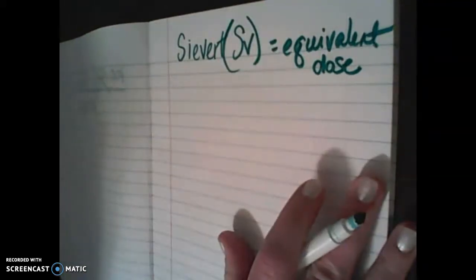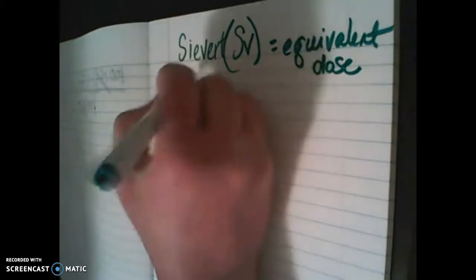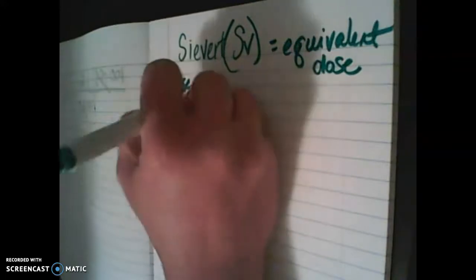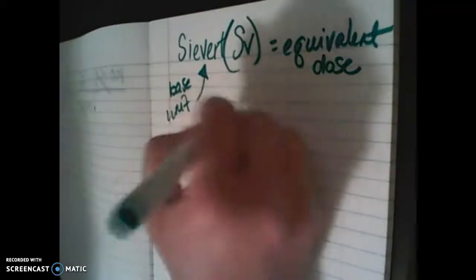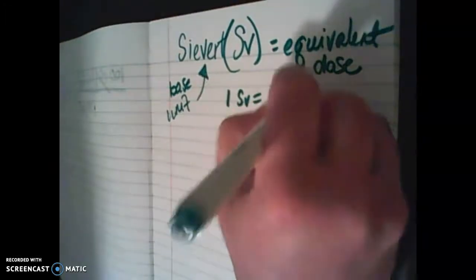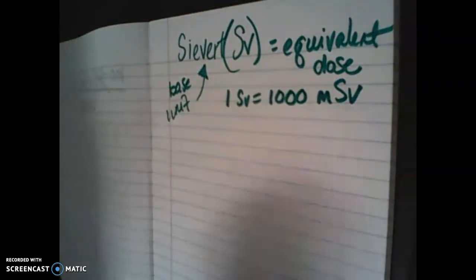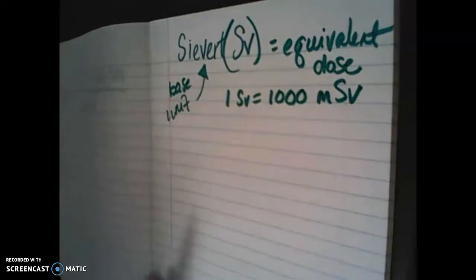Let's start talking about the sievert. Remember, the sievert is the unit for equivalent dose — this is the SI unit, and the sievert is going to be our base unit. One sievert is equal to 1,000 millisieverts. When we're calculating between sieverts and millisieverts it's the same concept, however our conversion factor is slightly different because we're looking for millis instead of centis.